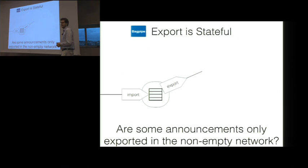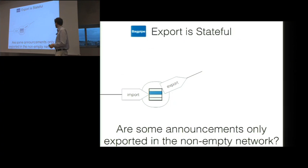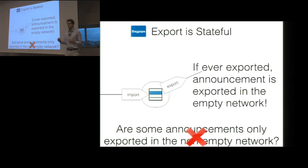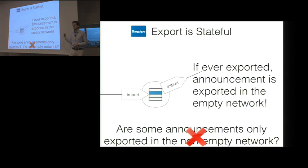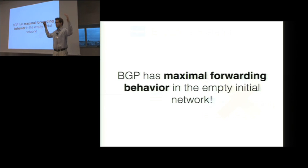The second case where BGP is stateful is on the export of announcements. Whenever a router imports and then exports an announcement and then exports exactly the same announcement right afterwards, BGP won't send the second one — this is to save data and avoid duplicate packets. But again, this statefulness doesn't interfere with the initial network reduction, because in the empty network we always forward an announcement since there wasn't a previous announcement that could block it. The key insight is that BGP has maximal forwarding behavior in the initial network: any announcement forwarded via any trace will also be forwarded in the empty network.